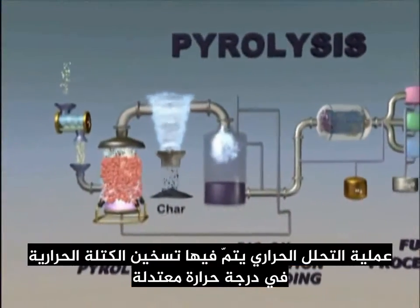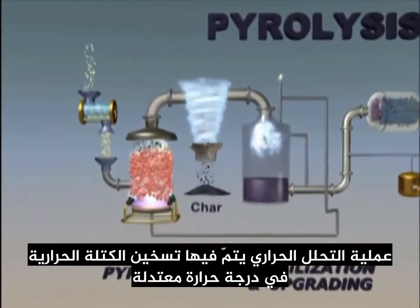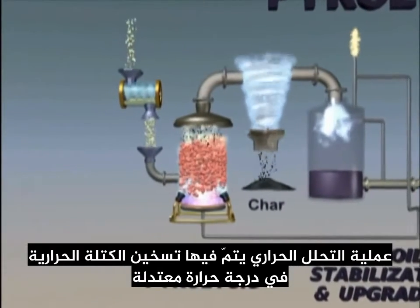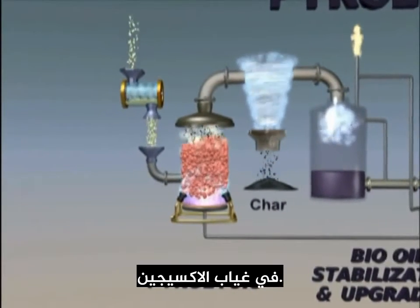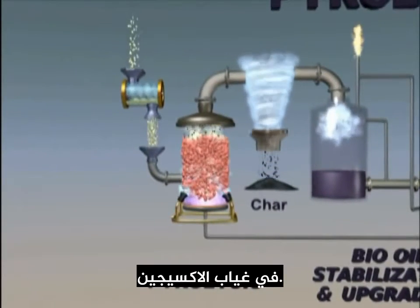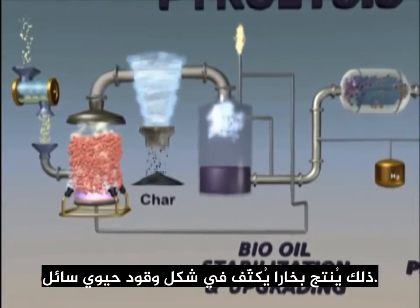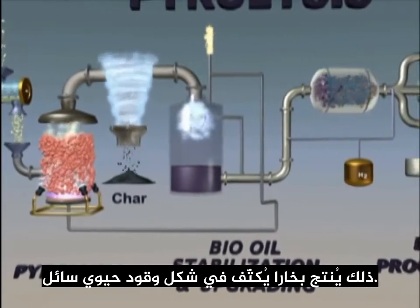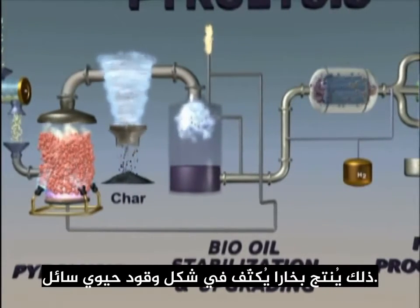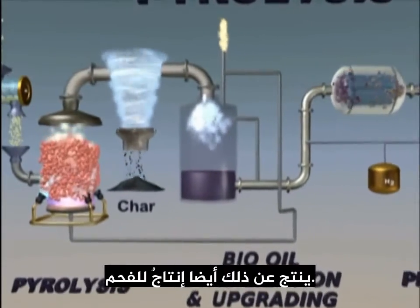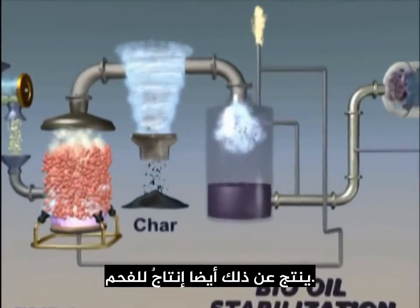The process of pyrolysis heats the biomass at moderate temperatures in the absence of oxygen. This produces vapors that are condensed into liquid bio-oil. Char is also produced during the pyrolysis process.